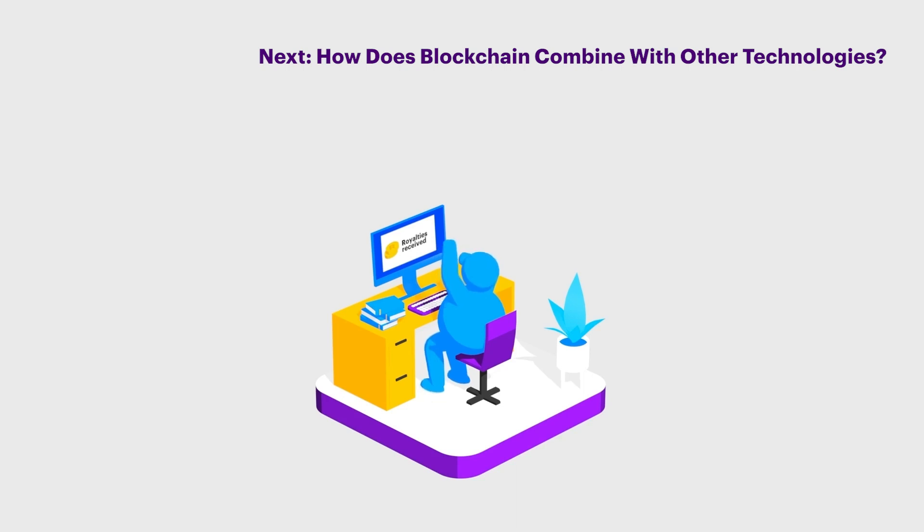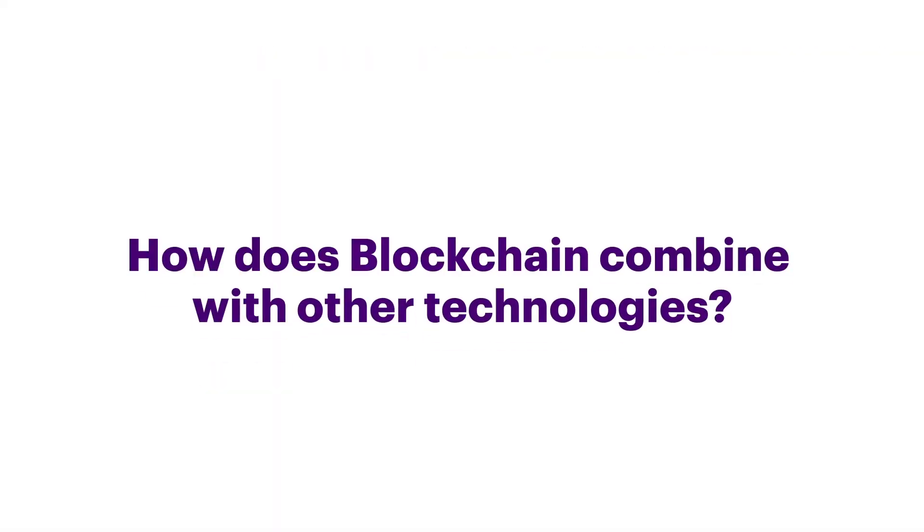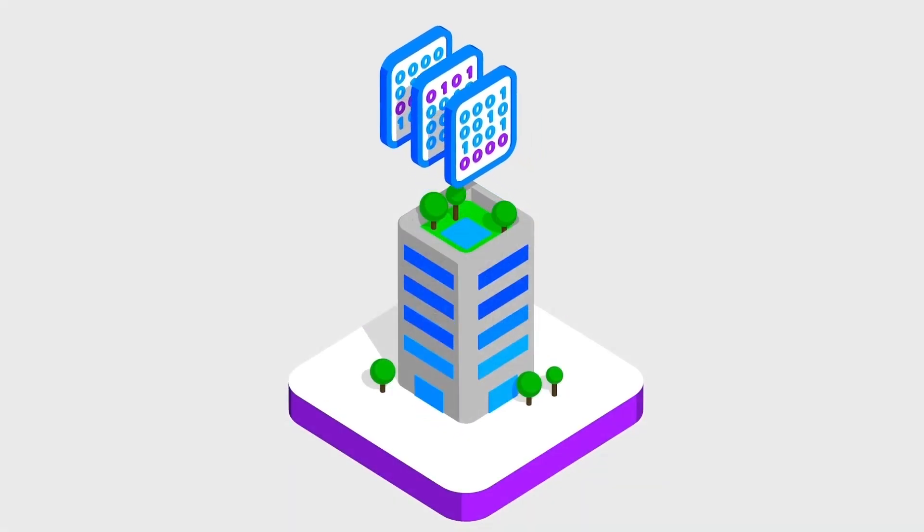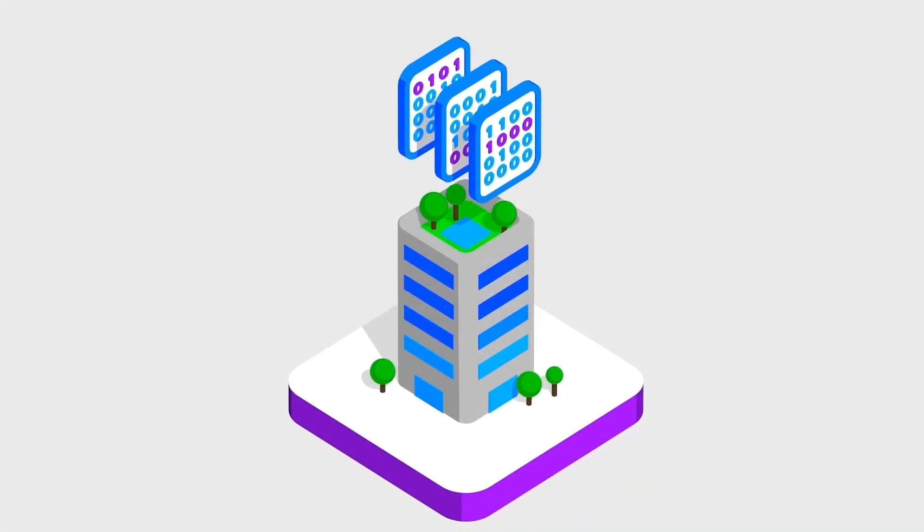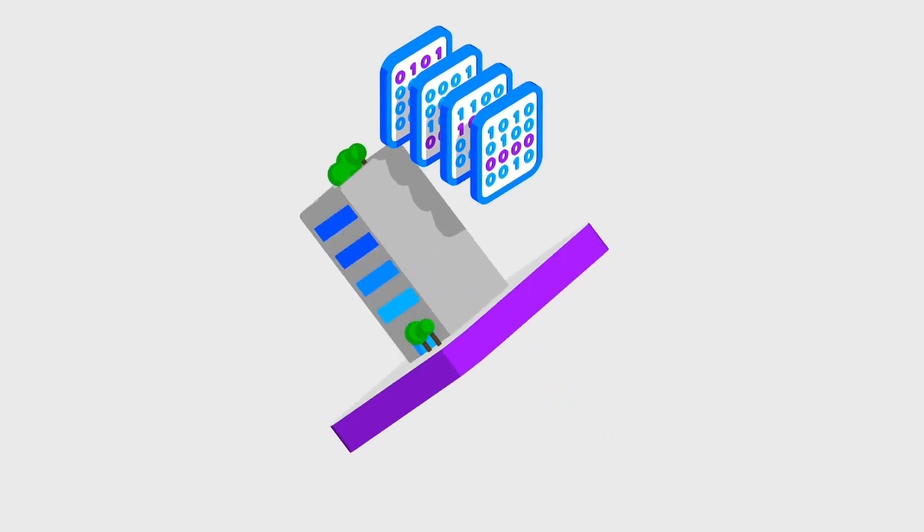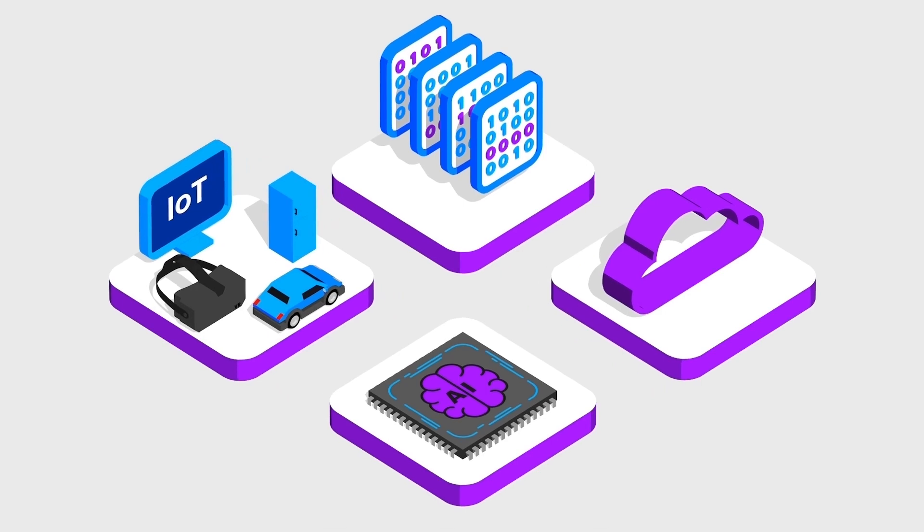How does it combine with other technologies? Blockchain and multi-party systems are a small part of an overall business revolution. Combining these technologies with artificial intelligence, cloud, and the Internet of Things will be game-changing. Let's look at three examples.